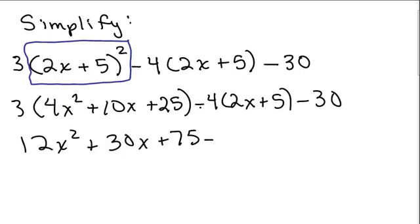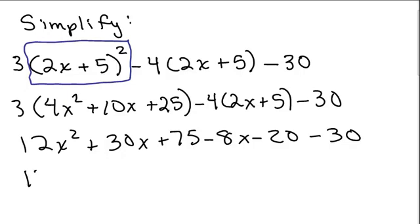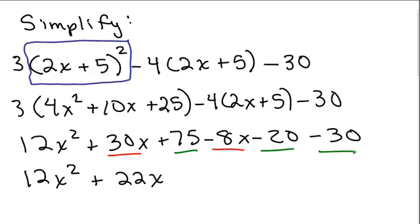Now we have to distribute our negative 4. So negative 4 times 2x will be minus 8x. Negative 4 times 5 will be negative 20. That's all we're distributing. And then we have a minus 30 at the end. The negative 4 only gets distributed to what's inside the parentheses. Now we're just going to add like terms. There's only one x squared term: 12x squared. The x terms are 30x and minus 8x, giving plus 22x. And then we have 75 minus 20 minus 30 — that's basically 75 minus 50 — so that's plus 25.